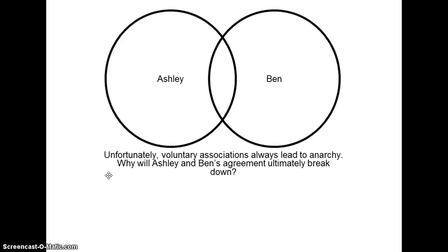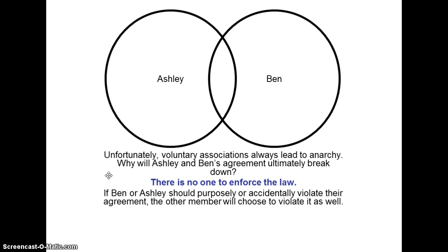Unfortunately, voluntary associations always lead to anarchy. Anarchy is a state of being where everyone has complete freedom to do whatever they want to do — basically where we started when Ashley and Ben were living in their own worlds. Why will Ashley and Ben's agreement ultimately break down and lead to anarchy? Because there is no one to enforce the law. There's actually an incentive for Ashley and Ben to break the law: by breaking it, Ashley gets to do her favorite activity and Ben gets to do his. If either should purposely or accidentally violate their agreement, the other will choose to violate it as well.